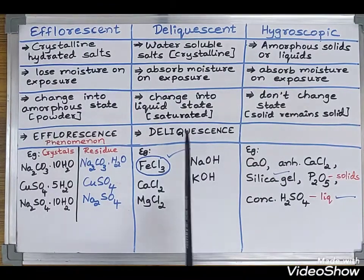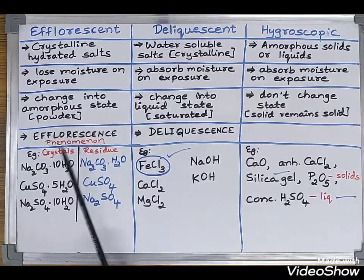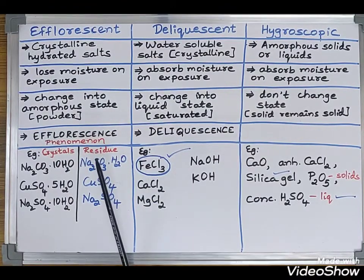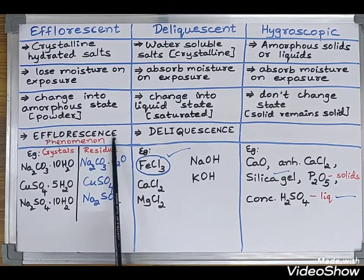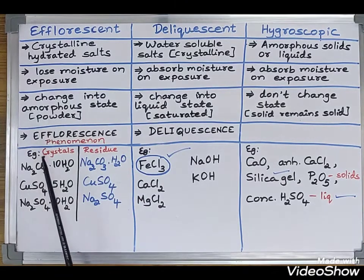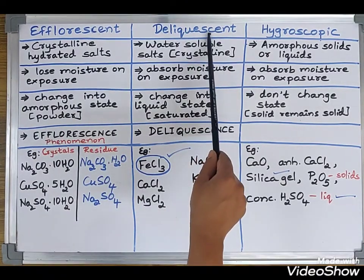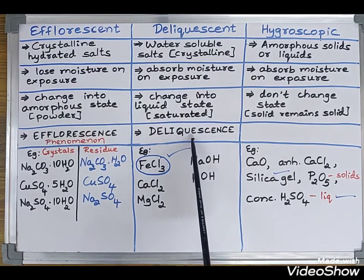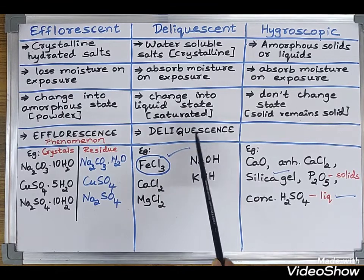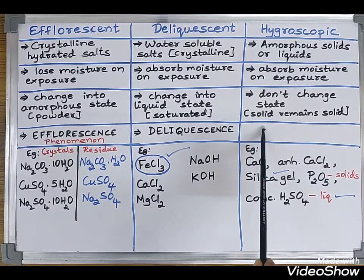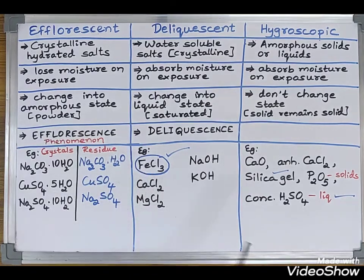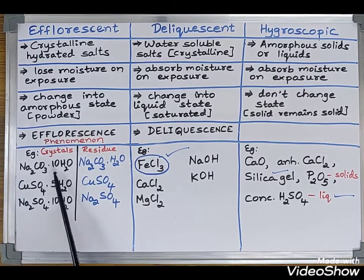These three substances undergo specific phenomena when exposed to the atmosphere. Efflorescent substances undergo a phenomenon called efflorescence — remember, the phenomenon is efflorescence and the substance is efflorescent. Similarly, deliquescent substances undergo a phenomenon called deliquescence. Hygroscopic substances also undergo a phenomenon, called hygroscopy, though this is outside the scope of the syllabus.